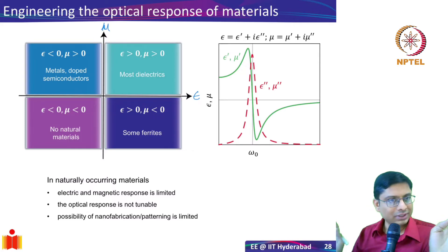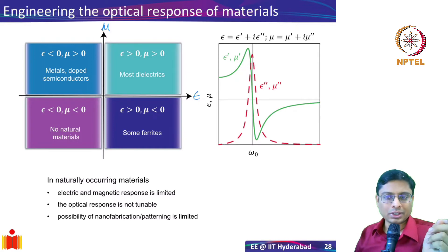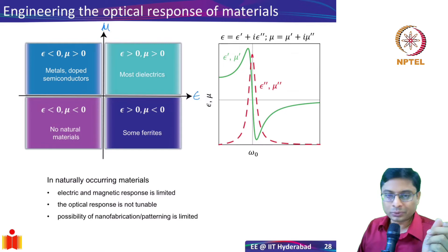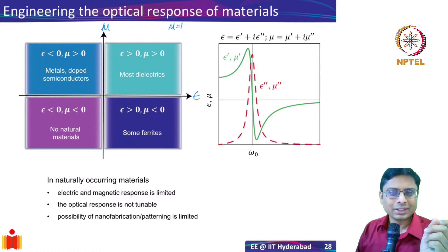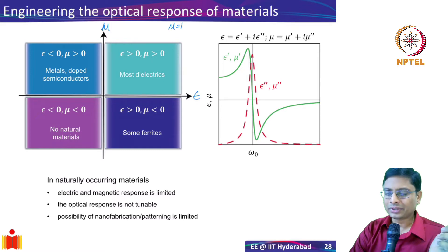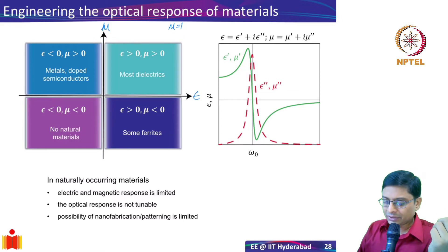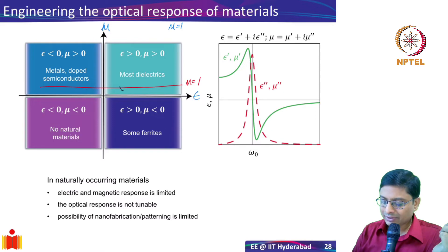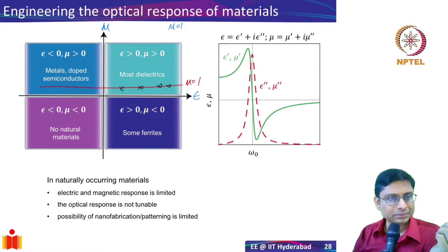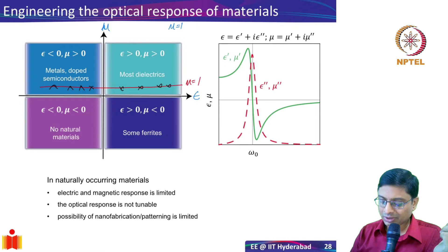Right now I'm not bothered about the imaginary parts — we understand epsilon and mu are complex quantities. So far I said mu equals one at optical frequencies because most materials never have a magnetic response. But in nature, some materials do. Looking at this four-quadrant diagram, most dielectrics and metals fall on the single line where mu equals one. Materials like glass and silicon have different positive epsilons, while metals have negative epsilon.